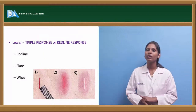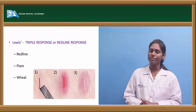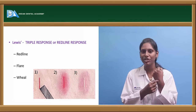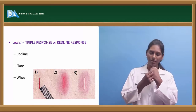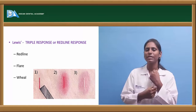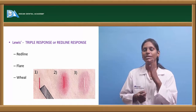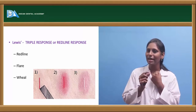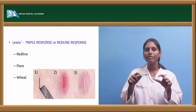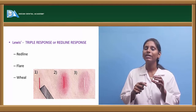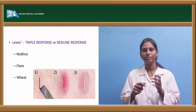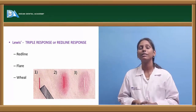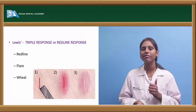There is something called the triple response or red line response, given by Lewis. When a sharp thin instrument is scratched on the skin, three responses are observed. Initially there will be a red line, which later enlarges; then it is surrounded by mild redness. Finally, there is a mild swelling called a wheal. So the sequence is: red line, flare, then wheal — this is the triple response indicating the inflammatory process.